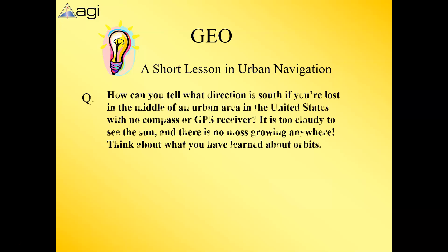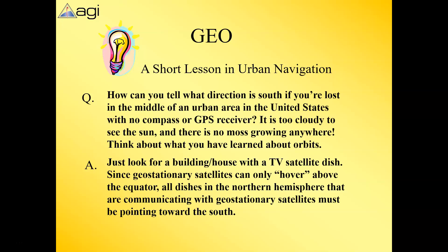Here's a question: if you're in the United States, lost without a compass or GPS, and it's cloudy so you can't see the Sun, how do you find directions? One trick is to look at communication satellite dishes — like DirecTV dishes on buildings. They have to point generally south, so once you see where they're pointing, you can figure out which direction is south.